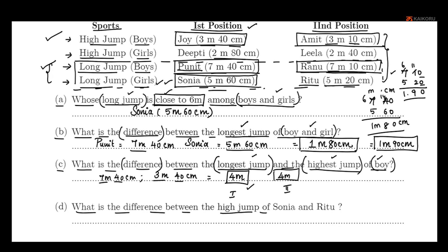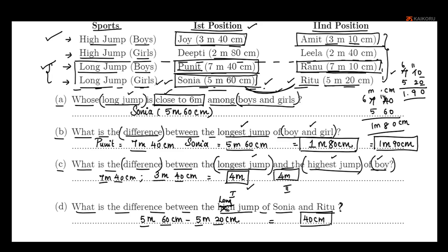The last question asks about the difference between the jumps of Sonia and Reef. Sonia's long jump is 5m 60cm and Reef's long jump is 5m 20cm. To find the difference: 5m minus 5m is 0, and 60cm minus 20cm is 40cm. So the difference is 40 centimeters.